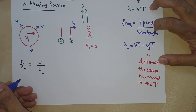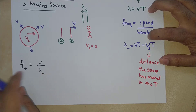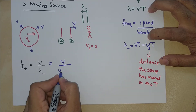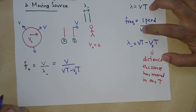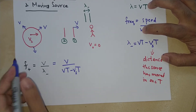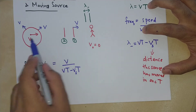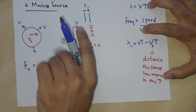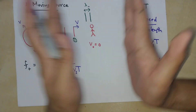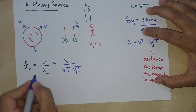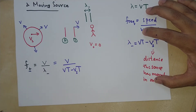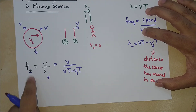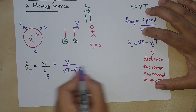Now plugging into the frequency equation, you get v over (vT minus vs·T). The source is moving toward the observer in this case. If the source is moving away, a similar argument applies — the second crest will be farther away, giving a greater wavelength and therefore a smaller frequency.